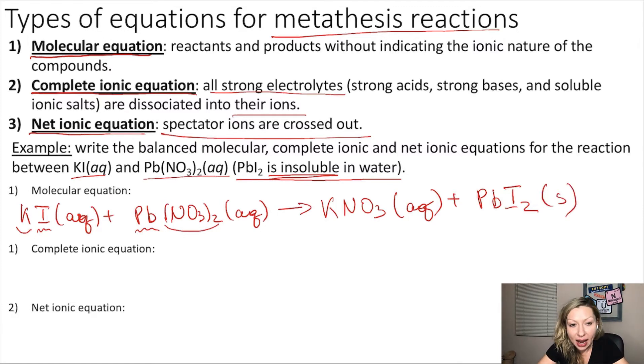Let's balance the reaction. We see that we have two nitrate ions on the reactant side and only one on the product side, so we need a two right there. Now we have two potassium ions on the product side, so we need a two on the reactant side. Now we have two iodide ions here, two iodide ions there. Good. So this is the simple molecular equation. All the reactants and products are indicated without giving the ionic nature of the compounds.